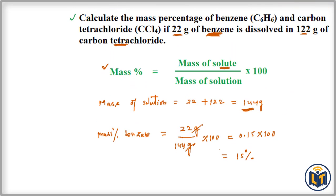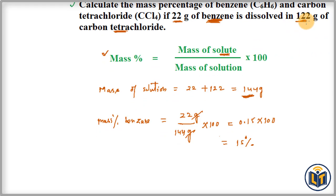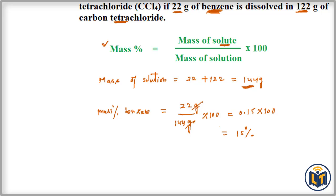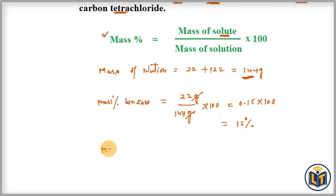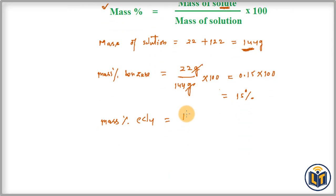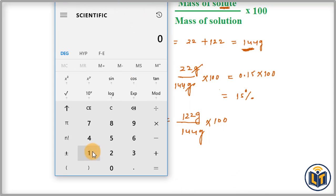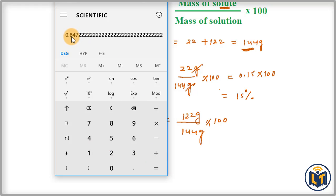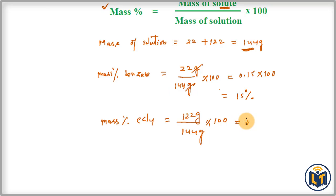Next, we calculate the mass percentage of the solvent. Mass percentage of carbon tetrachloride (CCl₄) = 122 g / 144 g × 100. Dividing 122 by 144 gives 0.85, and multiplying by 100 gives 85%.